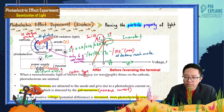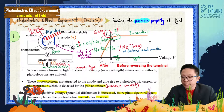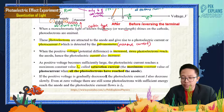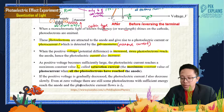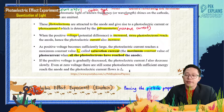When the voltage is increased beyond saturation, the current remains constant because no more extra electrons are ejected. If the positive voltage is gradually decreased, the photoelectric current will also decrease slowly. Even at zero voltage, some photoelectrons with sufficient energy will still reach the anode and a current I-naught flows — this will be explained in the next video.